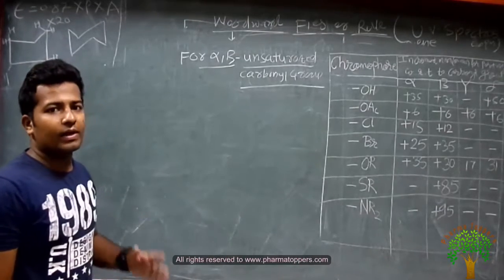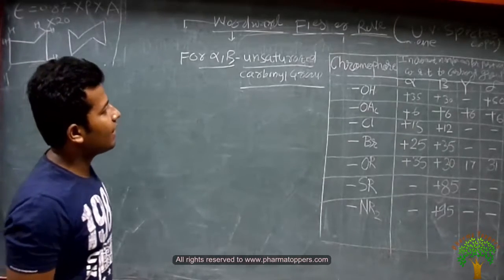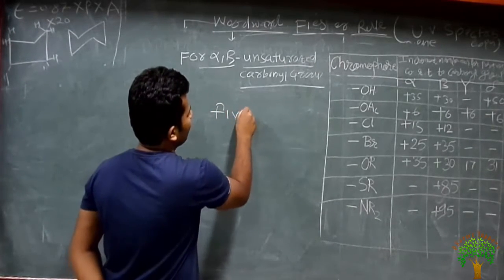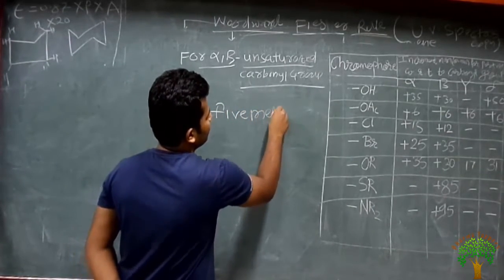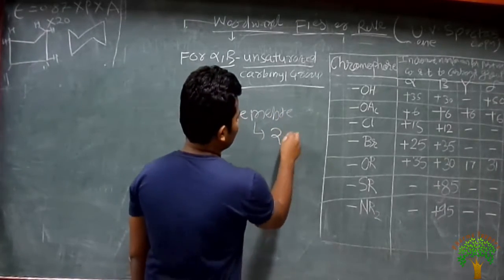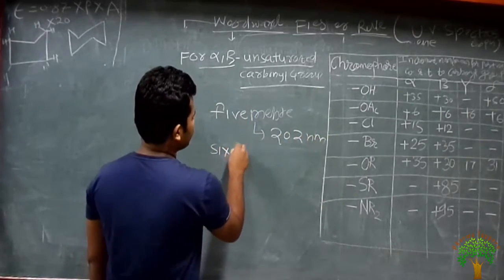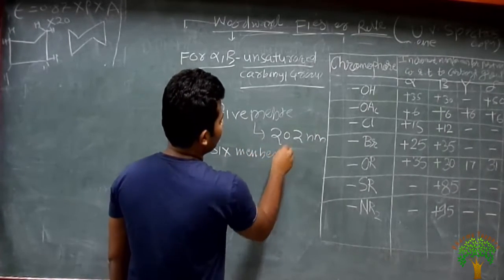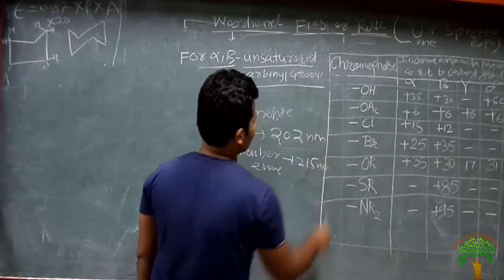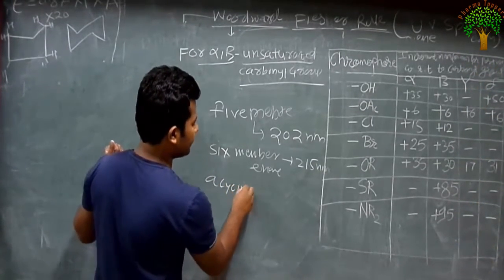First, we understand what is the basic value for the alpha-beta unsaturated carbonyl. For a five-membered ring, the basic value is 202 nanometers. For a six-membered enone, or simply enone or carbonyl, the value is 215 nanometers. And for acyclic diene — meaning aliphatic dienes with a carbonyl — that is called acyclic diene, the basic value is 245 nanometers.